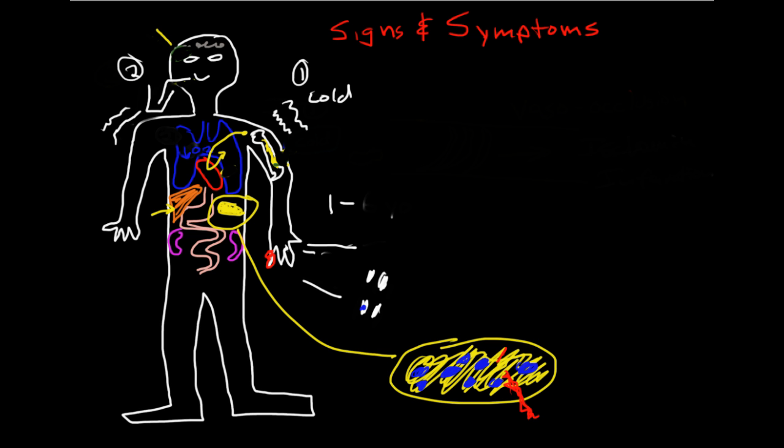These infections can be very severe - meningitis, osteomyelitis, severe pneumonias, and sepsis. In fact, severe infections are one of the major causes of mortality in patients with sickle cell disease. One of the mainstays of treatment is preventing infections.